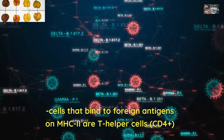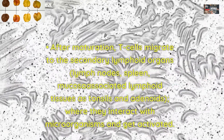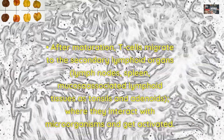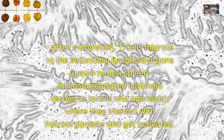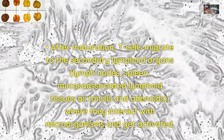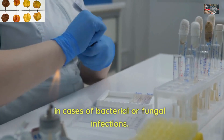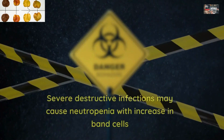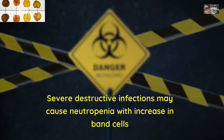After maturation, T cells migrate to the secondary lymphoid organs — lymph nodes, spleen, mucosa-associated lymphoid tissues such as tonsils and adenoids — where they interact with microorganisms and get activated. Consequently: Neutrophilia in cases of bacterial or fungal infections. Severe destructive infections may cause neutropenia with increase in band cells.